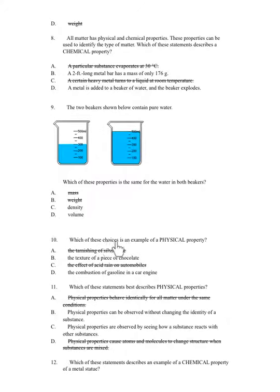Number 10. Which of these choices is an example of a physical property? A. The tarnishing of silverware. B. The texture of a piece of chocolate. C. The effect of acid rain on automobiles. D. The combustion of gasoline in a car engine.